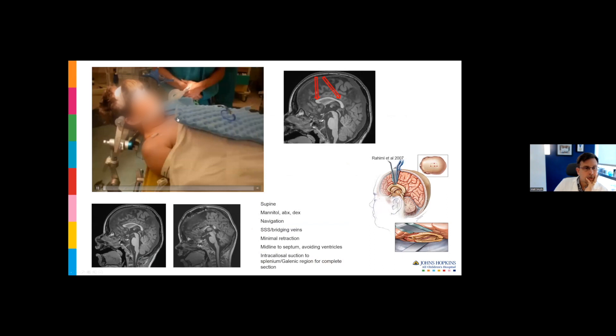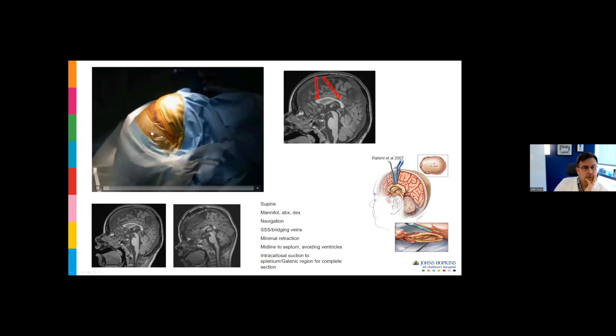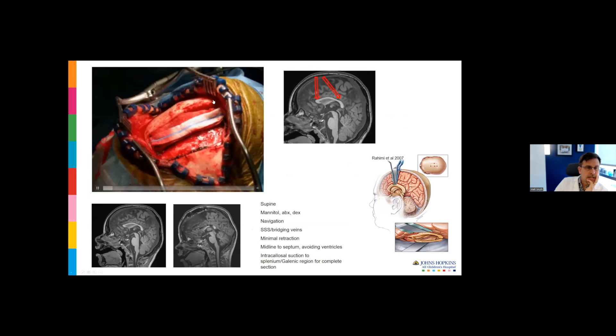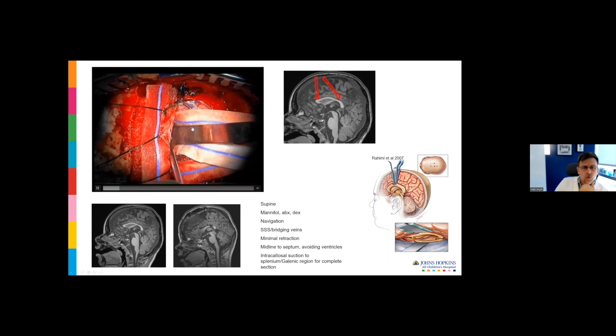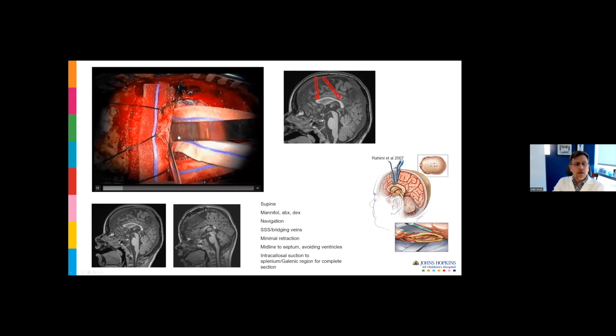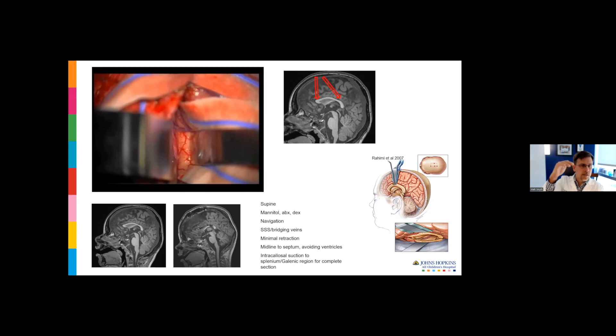This is a short video depicting the approach that I typically use for callosotomy. I like a supine approach. A craniotomy is half in front and half behind the coronal suture, crossing the midline. The sagittal sinus is underneath the gel foam here. I reflect the dura immediately, and I do incorporate a single frontal lobe brain retractor. I try to minimize retraction by gently aspirating the CSF, giving mannitol, gently hyperventilating, and keeping the head of the bed elevated.